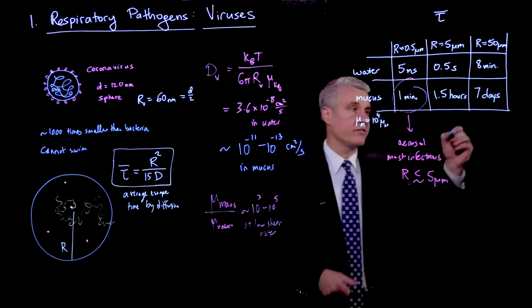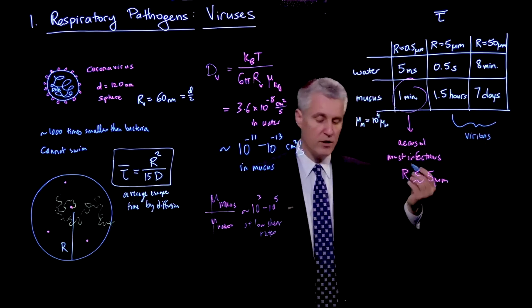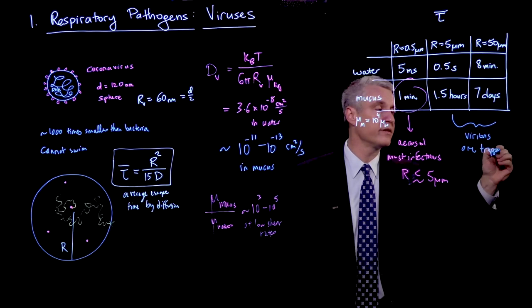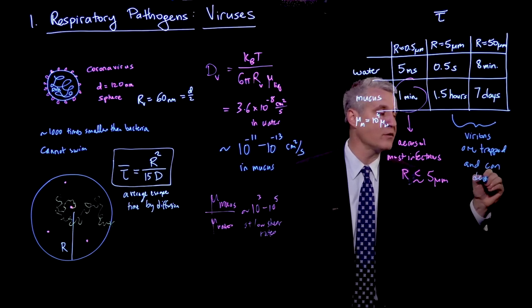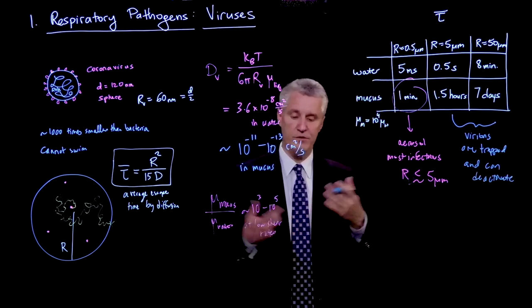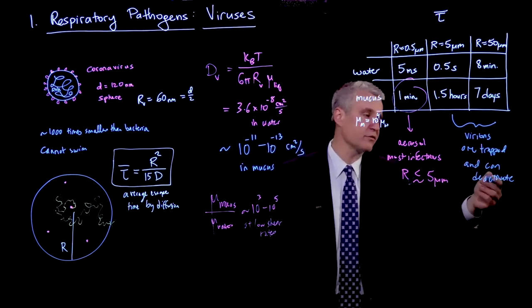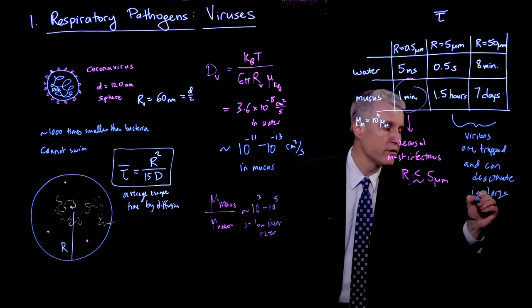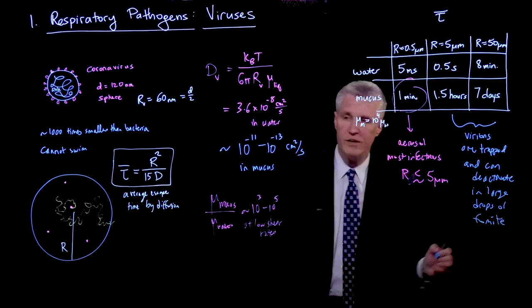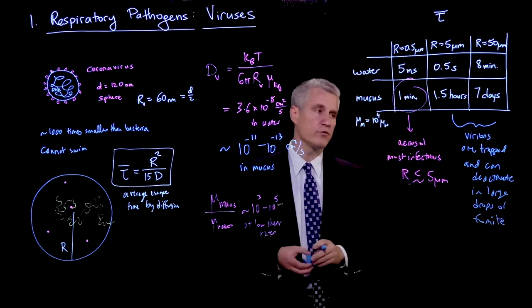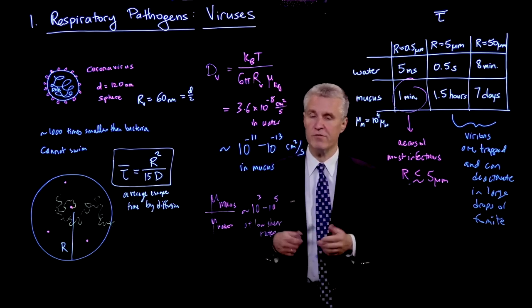So basically, what we would probably say is that in this range, the virions are mostly trapped. They have a hard time getting out of those droplets. So this is the case that the virions can deactivate in large drops, or the fomites, which are infectious residues on surfaces that are left over from those droplets. So this really shows us that our focus should be on looking at aerosol droplets for viral transmission.